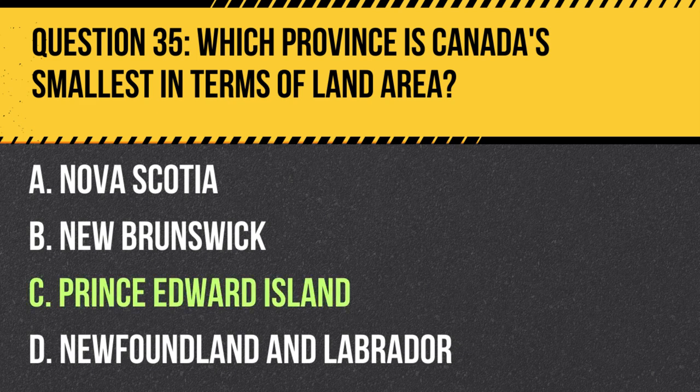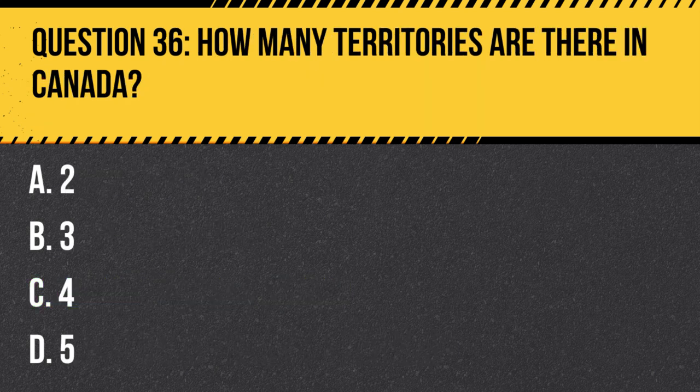Answer: C. Prince Edward Island. Prince Edward Island is the smallest province in terms of land area in Canada, with a total area of approximately 5,660 square kilometers (2,185 square miles).